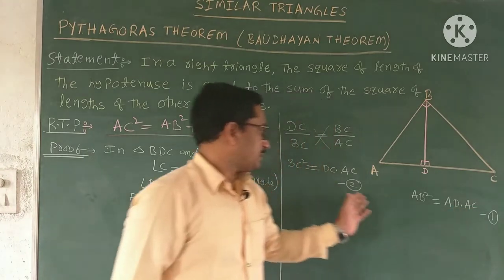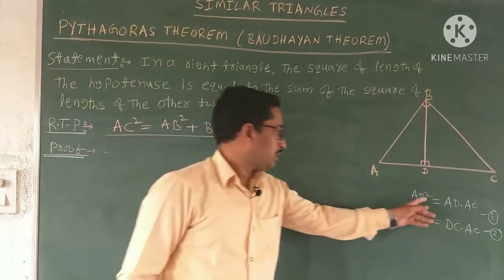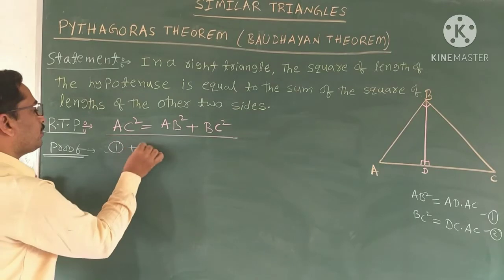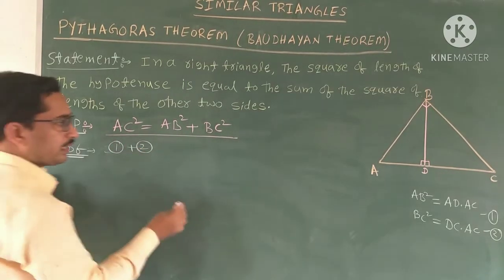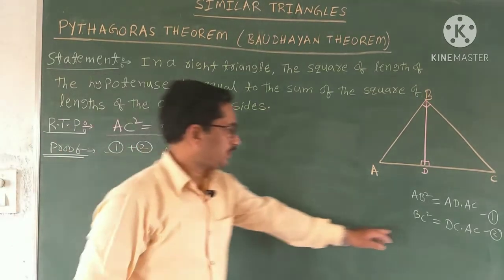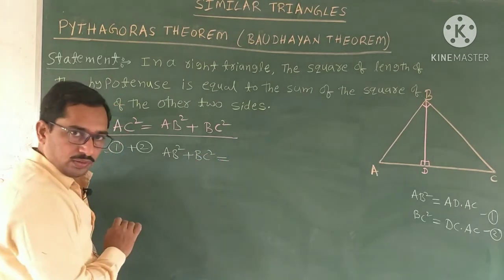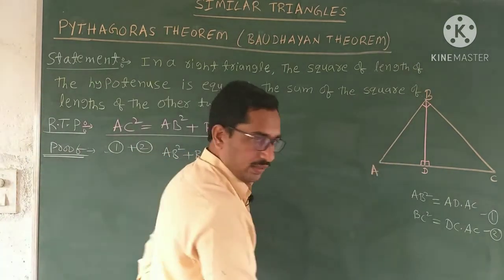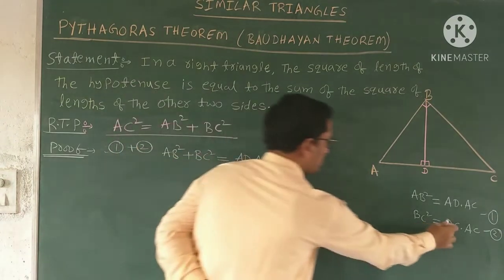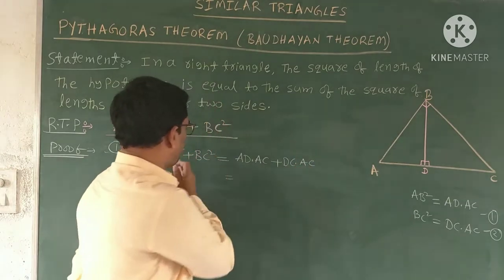We already have equation 1: AB² = AD × AC, and equation 2: BC² = DC × AC. Now add equation 1 and equation 2. The left side gives AB² + BC². The right side gives AD × AC + DC × AC.